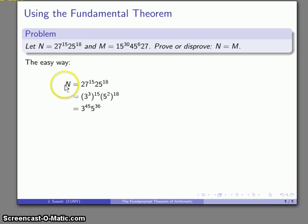So this number N, 45 3's, 36 5's all multiplied together. Likewise, if I consider this number M, I can rewrite this number as a product of prime factors. 15 is 5 times 3, 45 is 3 to the second times 5, 27 again, 3 to the third.